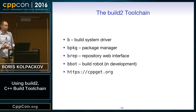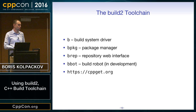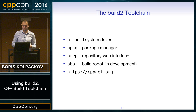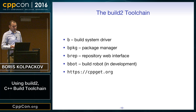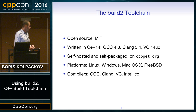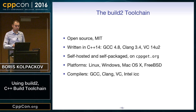A quick overview of the toolchain — it's called a toolchain because it's several tools. There's the build system driver called B. For me personally, typing 'make' is too long, so we decided to call it B. Then there's the package manager, a repository web interface which is an Apache module, and we're working on the build board. We also started cppget.org, which is a repository of open source packages which we hope will become the repository one day. It's open source, licensed under the MIT, written in C++14, self-hosted and self-packaged. It supports all the major platforms and compilers. Visual Studio and Windows support just landed in the last version.